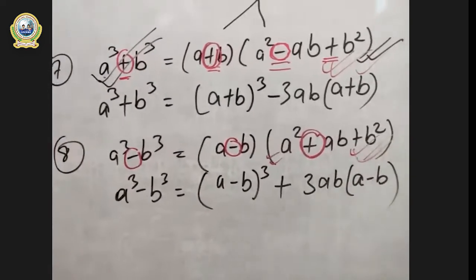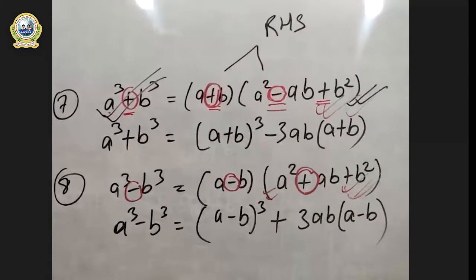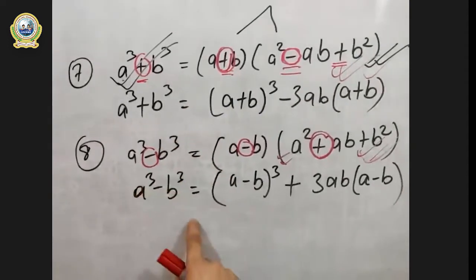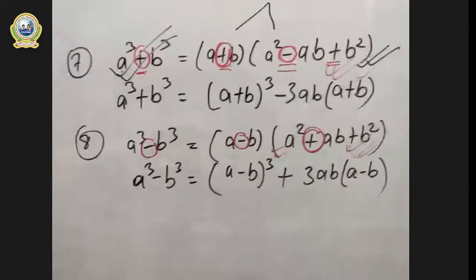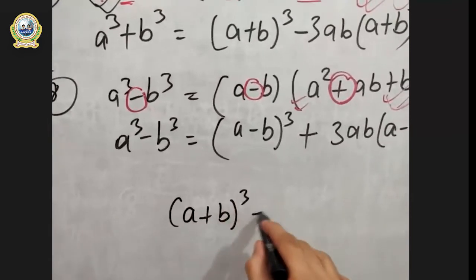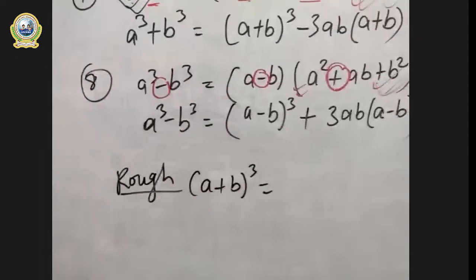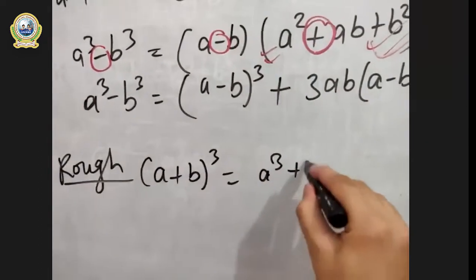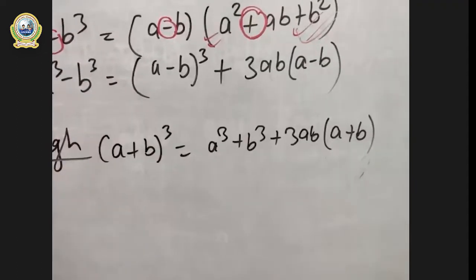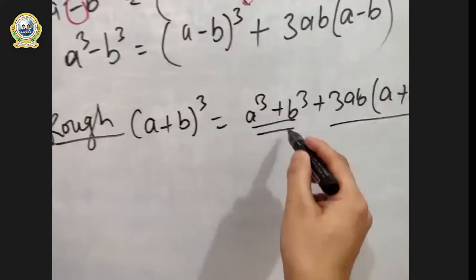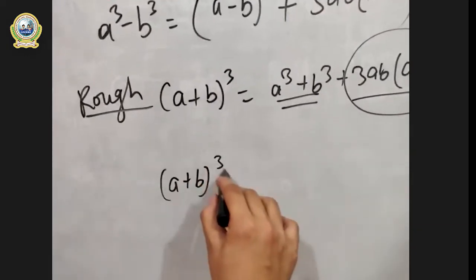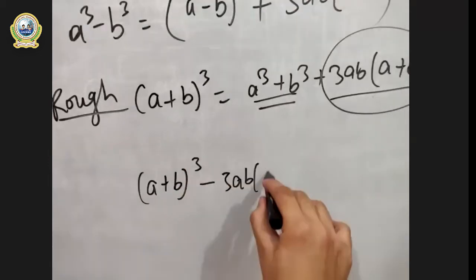These two formulas are very important and very confusing for beginners, so be careful. You might be wondering where the second form came from. In the previous lecture I had written: (a + b)³ = a³ + b³ + 3ab(a + b). If you rearrange — taking the 3ab(a+b) term to the left — you get: (a + b)³ - 3ab(a + b) = a³ + b³. That is how the second formula is derived.